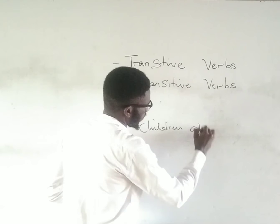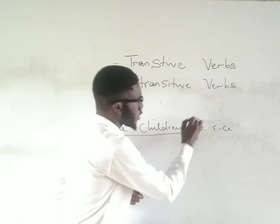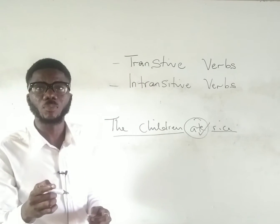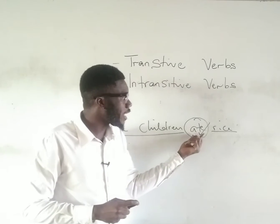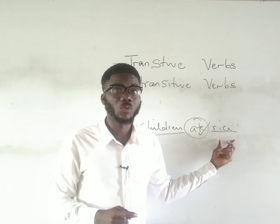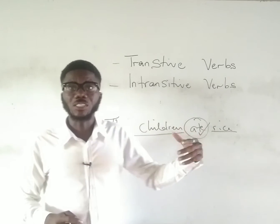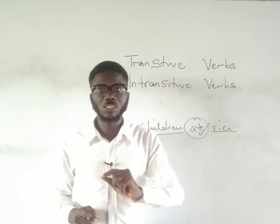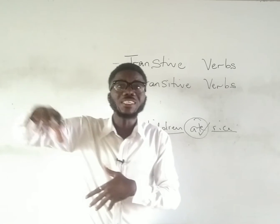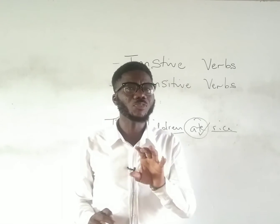Take for instance: 'The children eat rice.' 'The children' is the subject, 'eat' is the verb, and 'rice' is the object. This verb here is a transitive verb because the action is affecting something — it needs an object for you to understand what it is trying to say. Another example: 'The principal punished the students.' 'Punished' is a transitive verb because it needs 'the students' for you to understand what it is saying; the action plays out on the students.